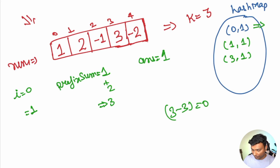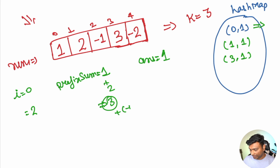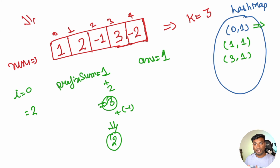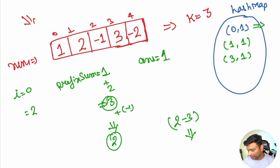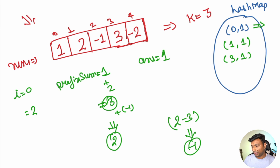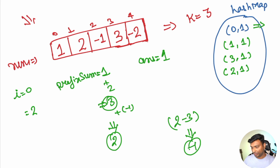At index 2, we add -1, so prefix_sum becomes 2. We check the hash map for 2 minus 3 = -1. There is no such entry, so the answer stays at 1. We update the hash map with {2: 1}.